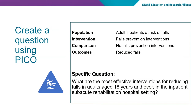Using our scenario and putting it into a PICO format, our population becomes adult inpatients at risk of falls, with the intervention being falls prevention interventions. The comparison is no falls prevention interventions, and the outcomes are reduced falls. So turning that into a question: what are the most effective interventions for reducing falls in adults aged 18 years and over in the inpatient subacute rehabilitation hospital setting?